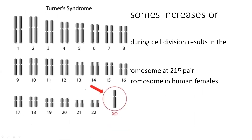Turner syndrome is written as XO. Why can it not be male? There is no Y chromosome — Y chromosome makes XY, so X0 will be a female only, not a male.